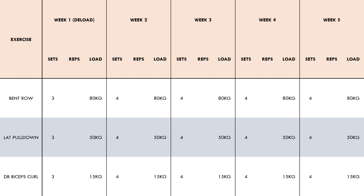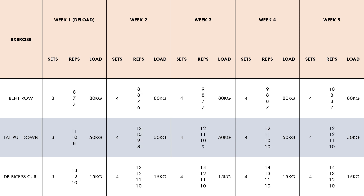Over a five week mesocycle, the trainee may perform the following reps. As we can see, the reps increase slightly on average over time and all other variables have remained the same. Therefore, assuming the trainee is familiar with these exercises, we can probably attribute this increase in performance to muscle growth. Trainees shouldn't expect progress to increase dramatically from week to week unless they are performing an unfamiliar exercise.